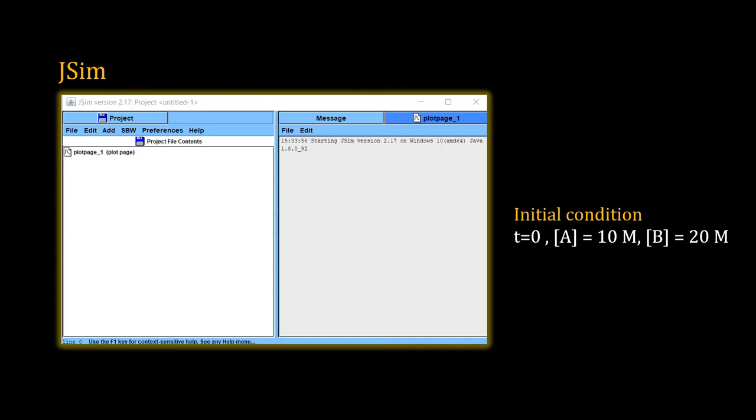To solve the model, we must specify the initial condition. I have considered that at t equal to 0, the initial time point, A is equal to 10 molar and B is equal to 20 molar. We also need to specify the values of the parameters of the model: k1 equal to 0.2 and k2 equal to 0.4.